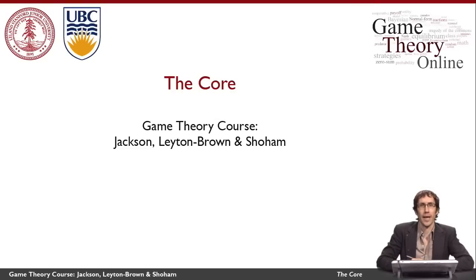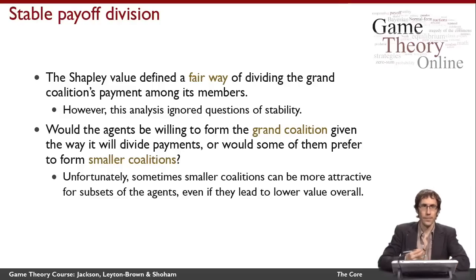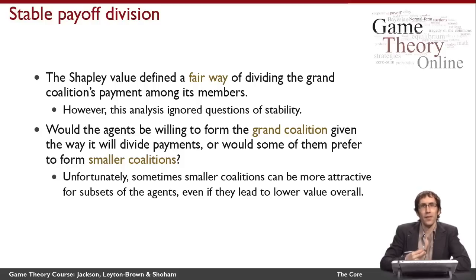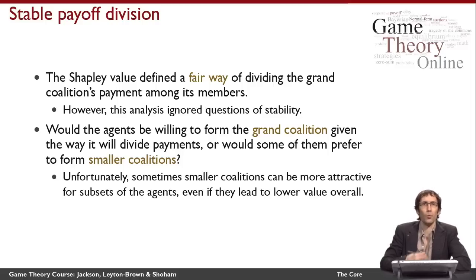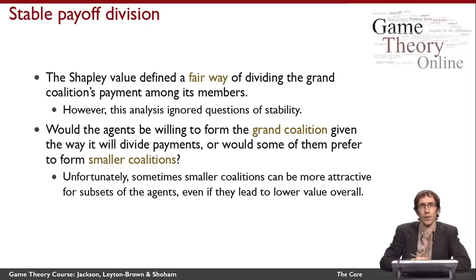This video is about the coalitional game theory solution concept called the core. Recall that the Shapley value told us about how to divide the coalition's value fairly among all of its members. Here, we instead want to think about whether the agents would be willing to form the grand coalition, as compared to forming smaller coalitions that might give all of their members greater value than they're able to achieve in the grand coalition.